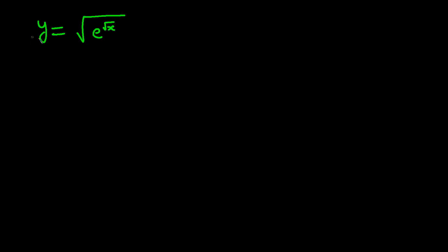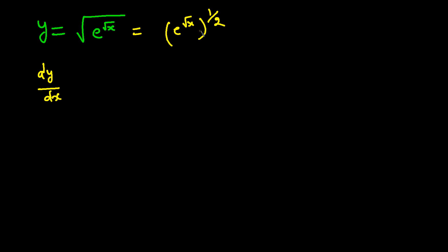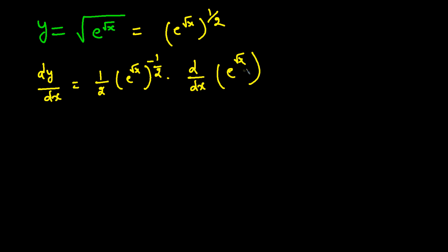Our first example is y equals the square root of e to the power square root of x. We rewrite this as e raised to the power x to the one-half. Now finding dy/dx, this looks like our first rule. Using the chain rule, the derivative of the outer function gives one-half times e raised to power x to the one-half minus one, times d/dx of e raised to power x.